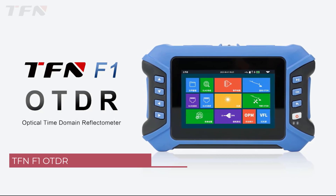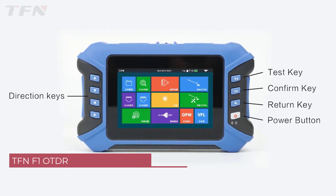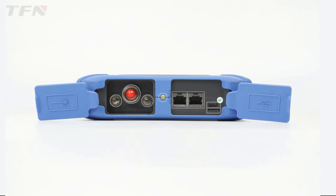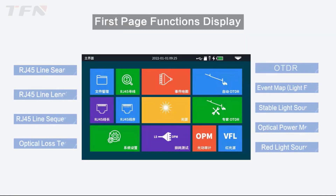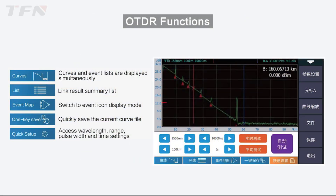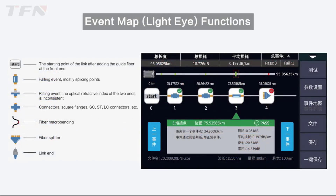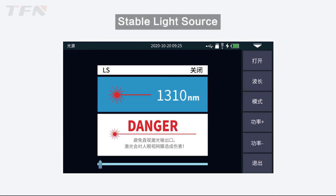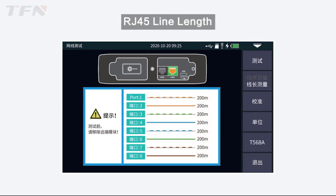Number 3. TFN-F1 OTDR Fiber Optic Tester. The TFN-F1 OTDR Fiber Optic Tester is a compact and efficient tool designed for professionals working with fiber-optic networks. With its brand name TFN, this model comes in two variants, the F1 and F1K, offering versatility to suit various testing needs. One of the standout features of this tester is its impressive dynamic range. The F1 boasts a dynamic range of 32/30 dB, while the F1K takes it a step further with 35/30 dB. This means it can effectively measure and analyze signals even in challenging environments, ensuring accurate results.